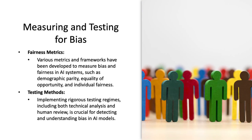Now let's take a look at measuring and testing for bias. The first are fairness metrics. Various metrics and frameworks have been developed to measure bias and fairness in AI systems, such as demographic parity, equality of opportunity, and individual fairness. The next are testing methods. Implementing rigorous testing regimes, including both technical analysis and human review, is crucial for detecting and understanding bias in AI models.